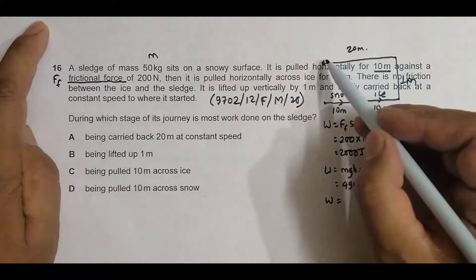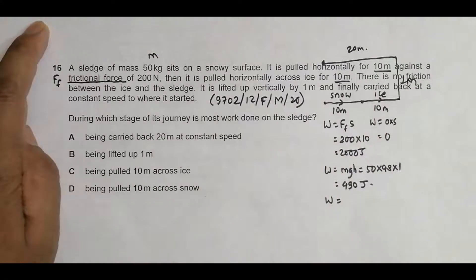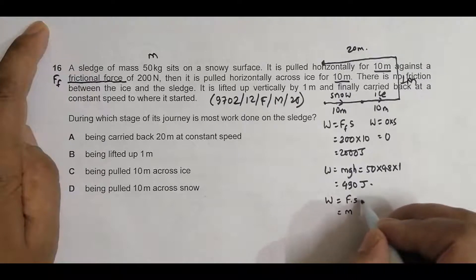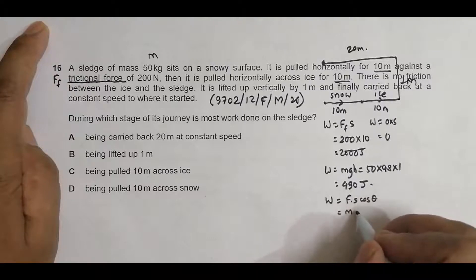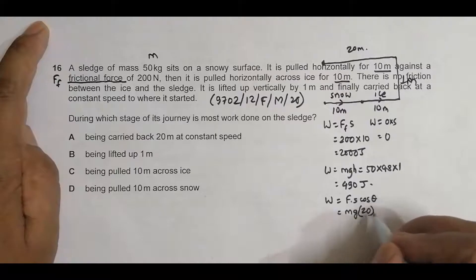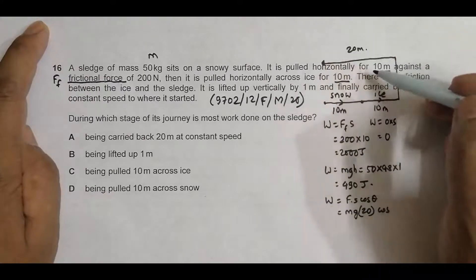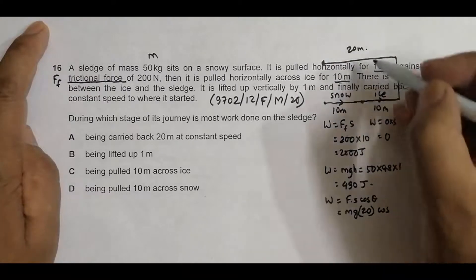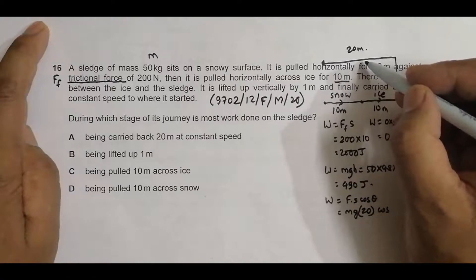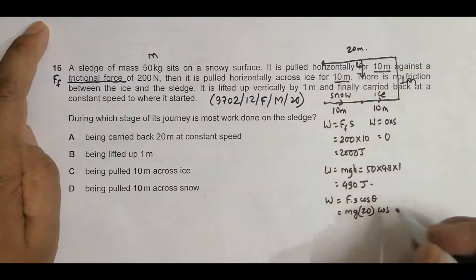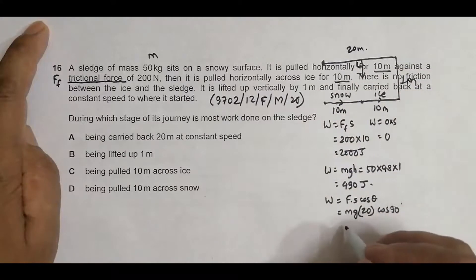Then we have to carry it back to the same initial point at constant speed. The work equals force times displacement times cosine theta. The only force here is gravity, and comparing gravity with the direction of motion, the angle equals 90 degrees. So it is cos 90, which equals zero — meaning the work required here is zero.